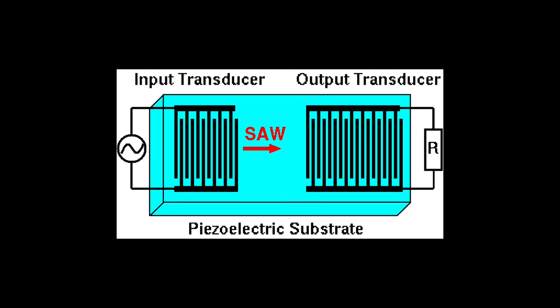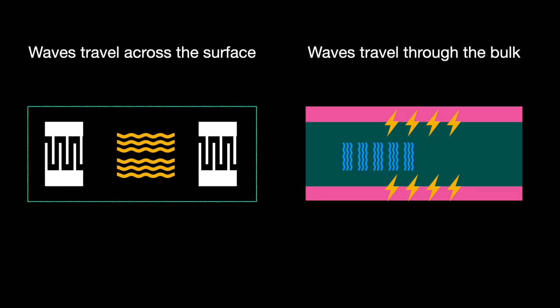BAW filters work very similarly to SAW filters — we turn RF energy into mechanical energy which we can then turn into a signal. However, the BAW filter directs the energy throughout its entirety, its bulk, rather than just along the surface. Such waves not only travel faster but can also travel farther without deterioration. There are two major subtypes of BAW filters: the Film Bulk Acoustic Resonator, or FBAR, and the Solidly Mounted Resonator, or SMR.